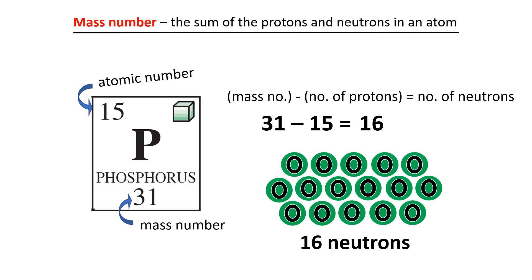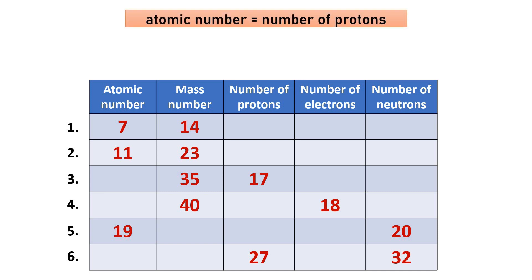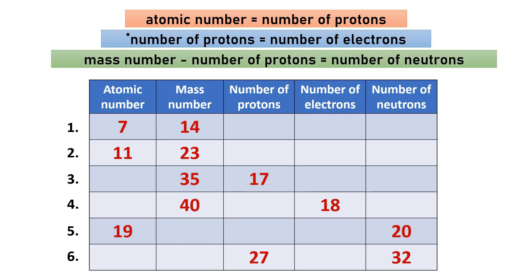Now let's use all three pieces of information to solve a set of six questions. But first, let's recap: the atomic number equals the number of protons; for a neutral atom, the number of protons equals the number of electrons; and mass number minus number of protons equals the number of neutrons. Pause this video and try answering the six questions, then continue to check your answers. We will assume all six examples are neutral atoms.